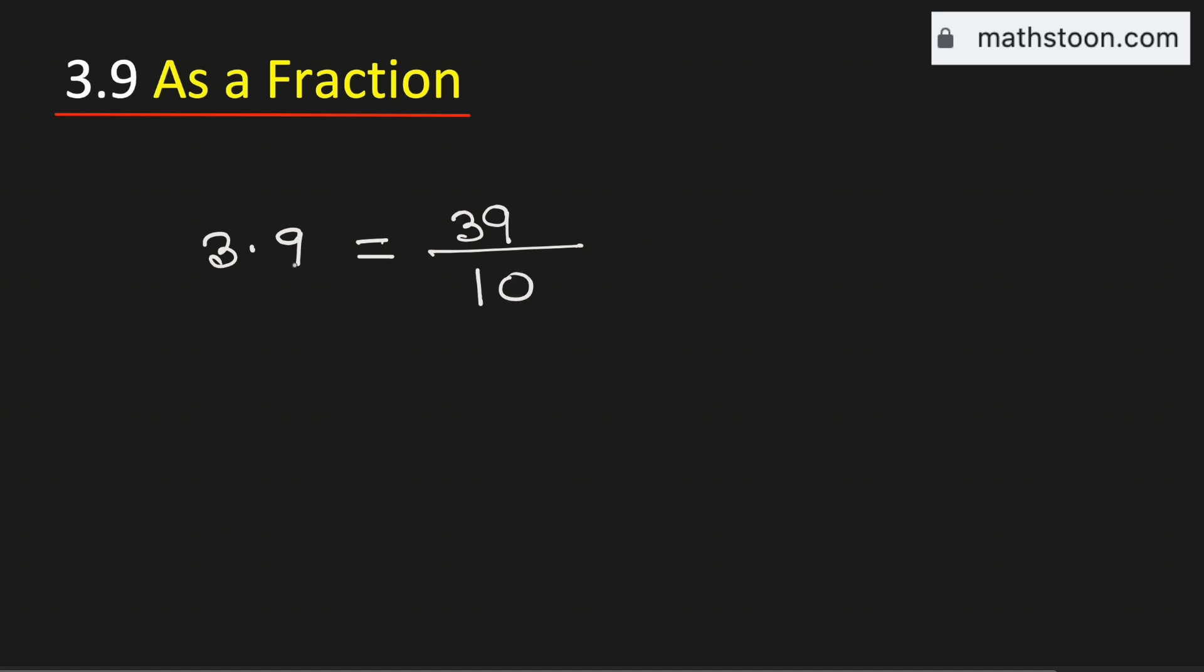Therefore, 3.9 as a fraction is equal to 39 over 10. And if you want to write as a mixed number, it will be equal to—see that 10 goes into 39 three times and 9 is left over, divide by 10.